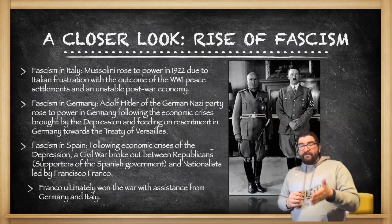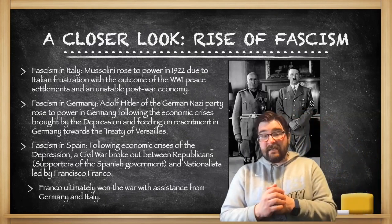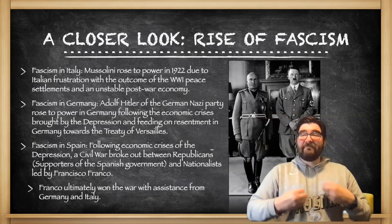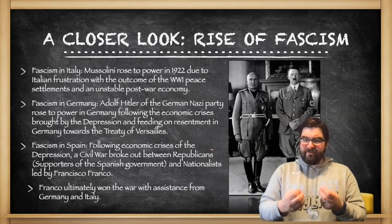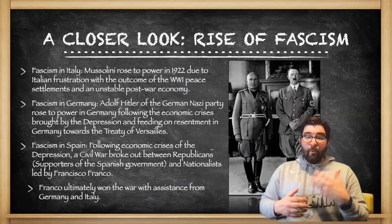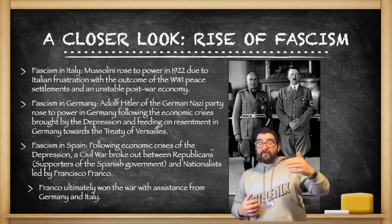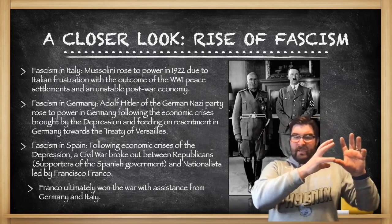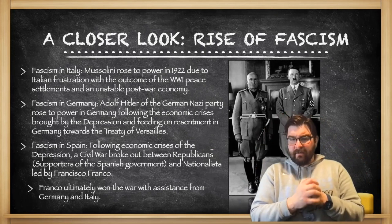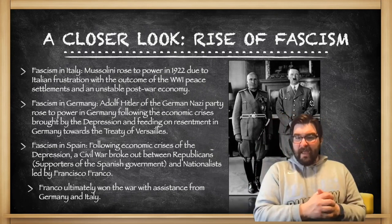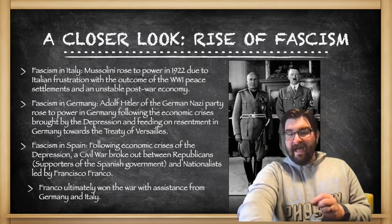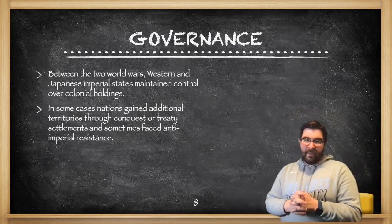In Germany, Adolf Hitler and the Nazi Party rose in the early 1930s, following the economic crises brought by the Great Depression and feeding on German resentment toward the Treaty of Versailles. In Spain, a civil war broke out in the aftermath of the Great Depression between fascists known as the nationalists, led by Francisco Franco, and Republican supporters of the Spanish government. Ultimately, with some help from Germany and Italy, those fascists won the Spanish Civil War.